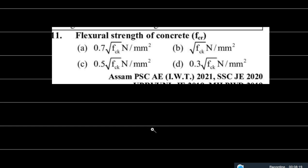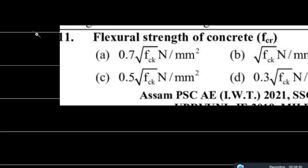The next question: what is the flexural strength of concrete? This question appeared in an inland water transport exam by Assam Service Commissioner in 2021. The correct answer is 0.7√fck. So option A is correct. Also recall that modulus of elasticity is 5000√fck (IS-456-2000) and 5700√fck (IS-456-1978). Option A is the correct answer.